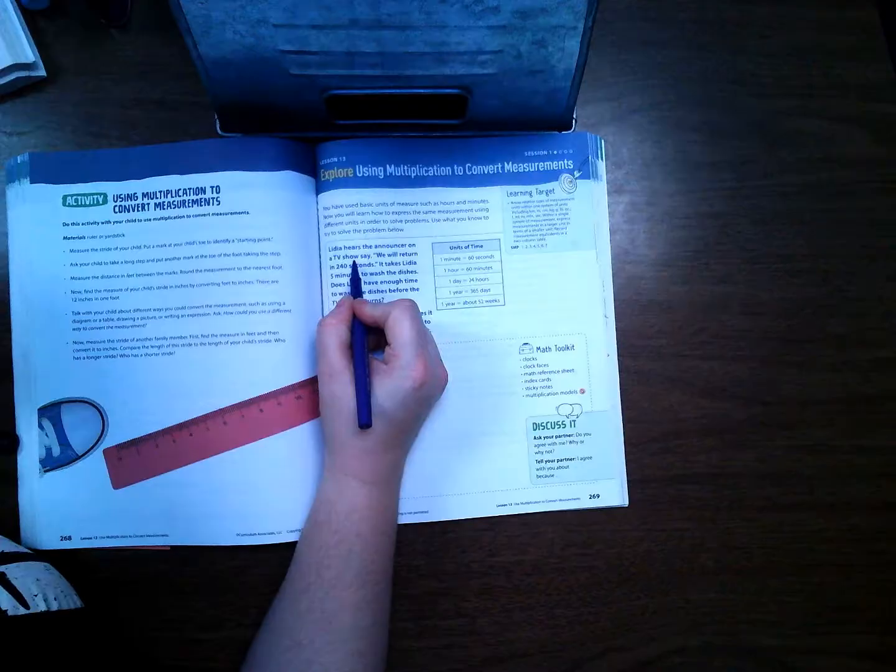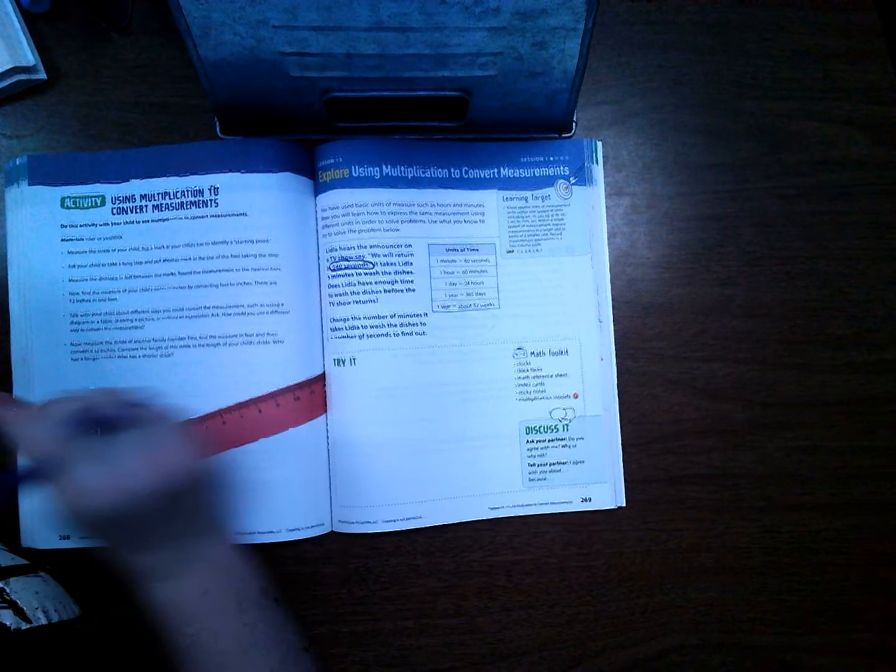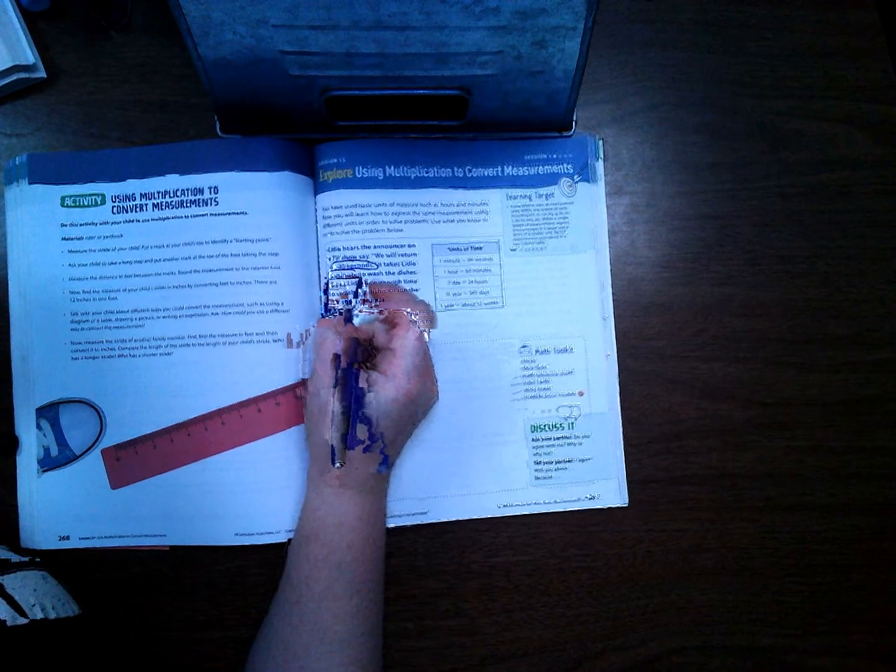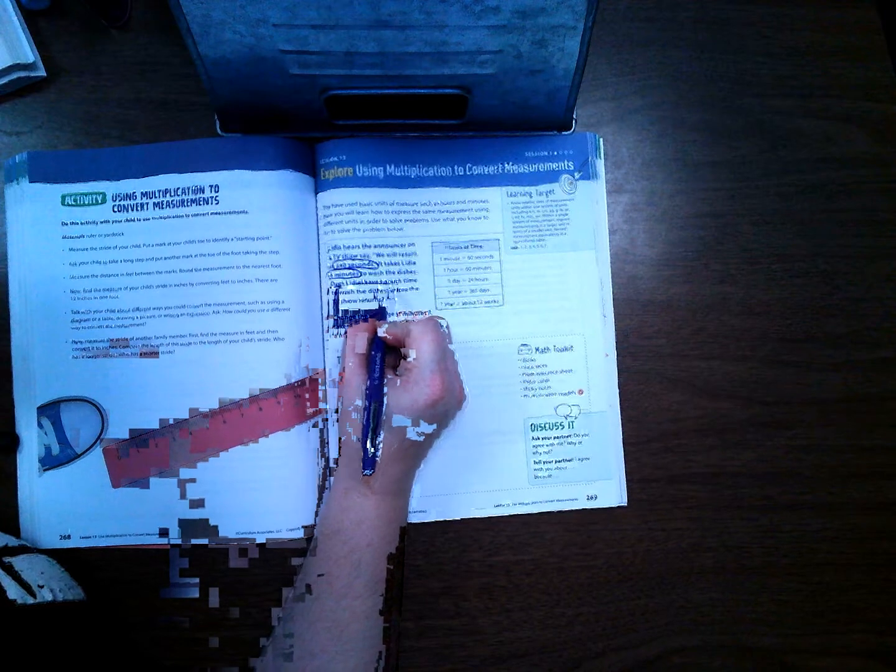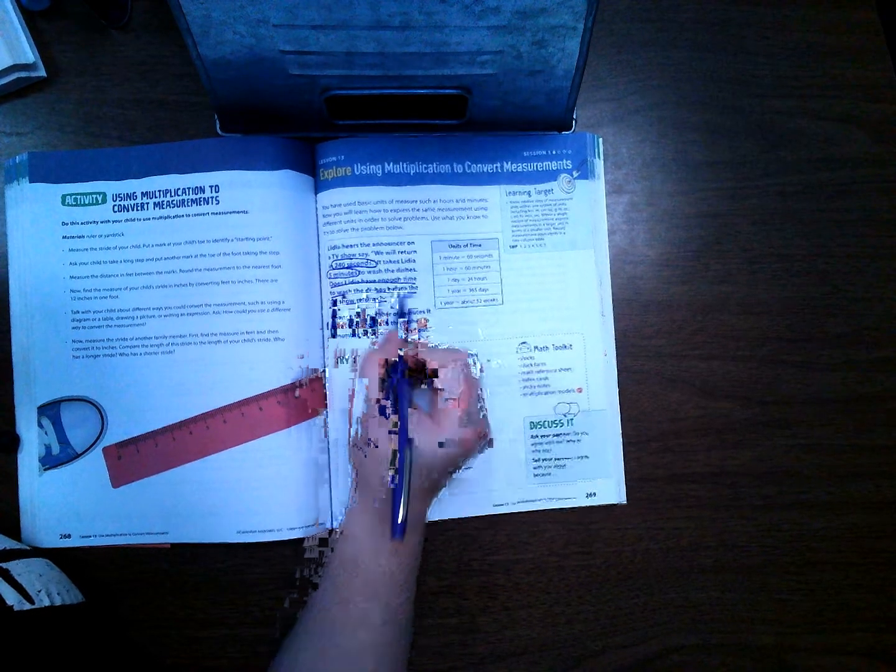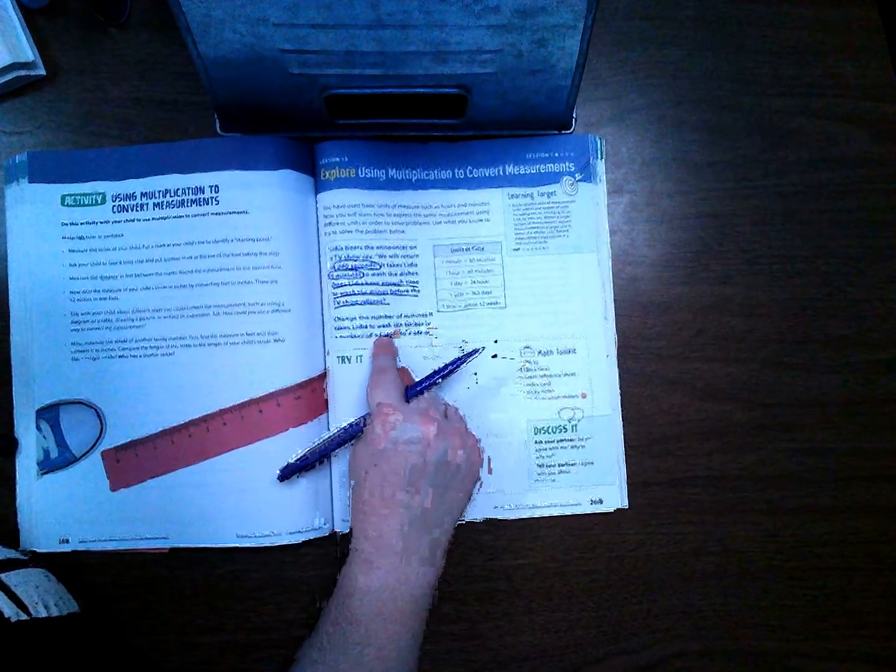Okay, Lydia hears the announcer on a TV show say we will return in 240 seconds. It takes Lydia five minutes to wash the dishes. Does Lydia have enough time to wash the dishes before the TV show returns? So it says change the number of minutes it takes Lydia to wash the dishes to a number of seconds to find out.